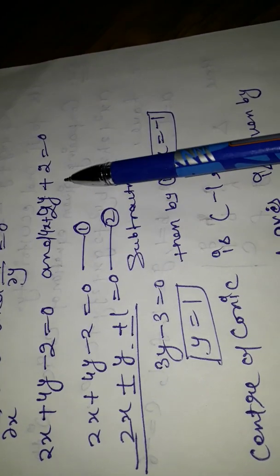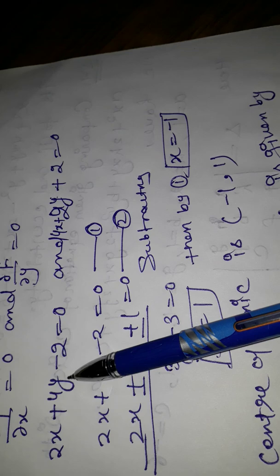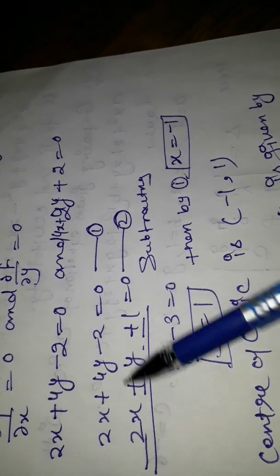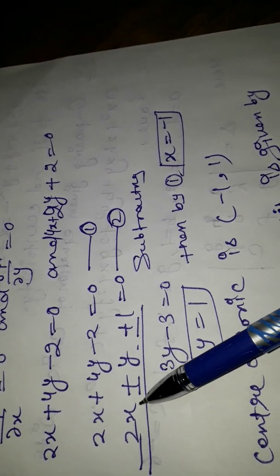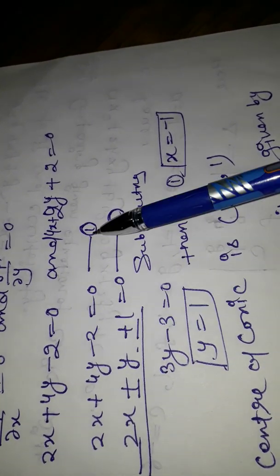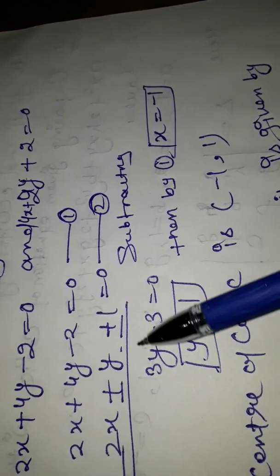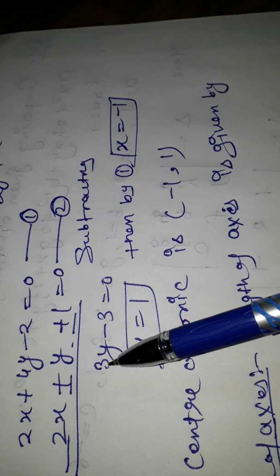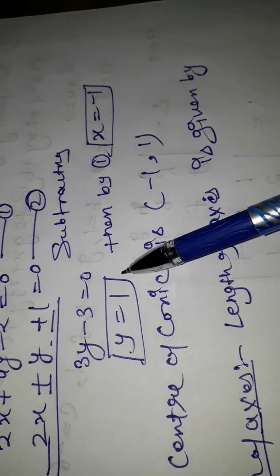Rewriting the equations: 2x + 4y - 2 = 0 and 2x + y + 1 = 0. Subtracting equation 2 from equation 1, we get 3y - 3 = 0, so y = 1.